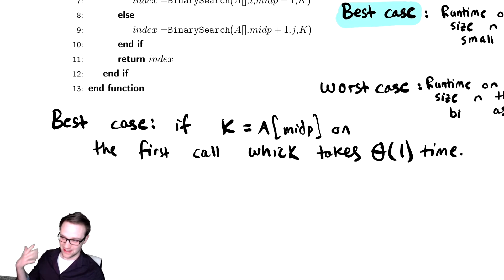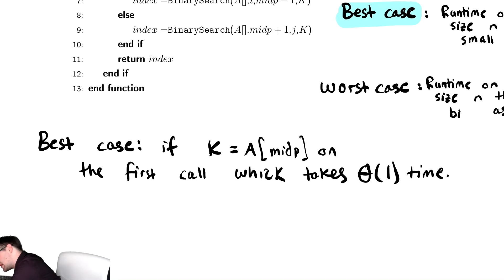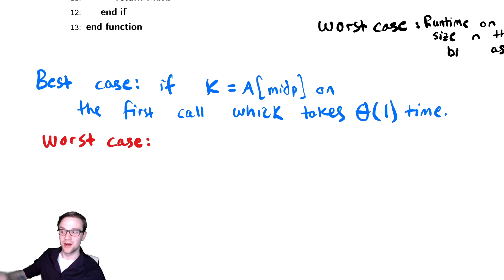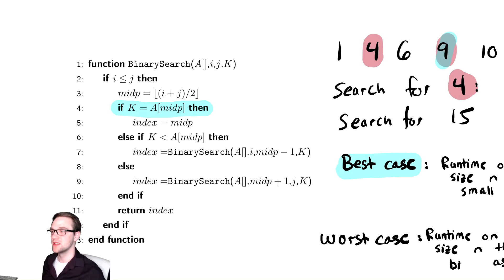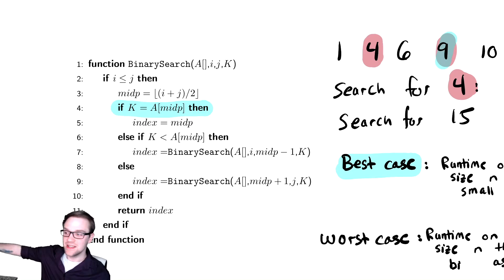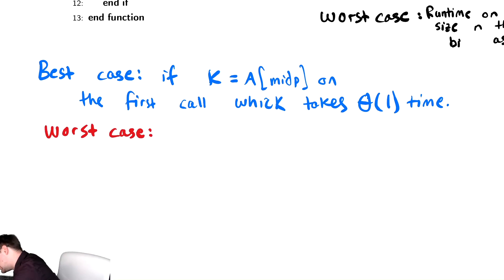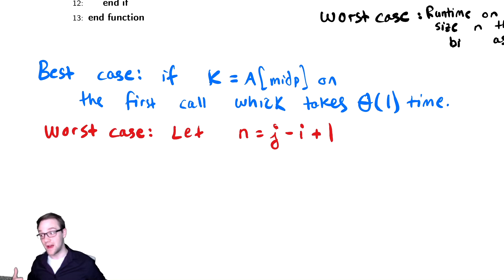The worst case is going to take a lot more heavy lifting. The worst case is clearly either the else if or the else, but they involve mid-p and make us care about these variables. Notice that n isn't even a variable in this problem — our algorithm takes a, i, j, and k as inputs. So we're going to let n equal j minus i plus 1. The algorithm searches within the range i to j inclusive, and the number of elements in that range is n. We define the size of the array to be this value.